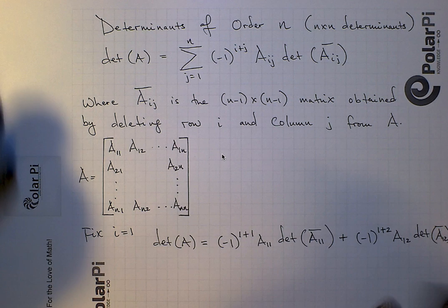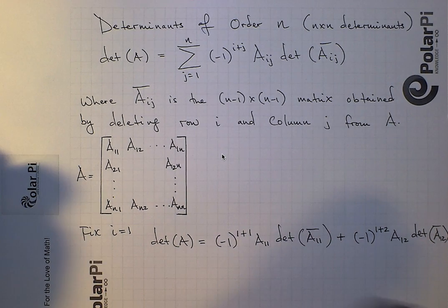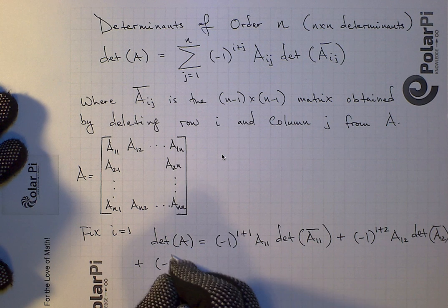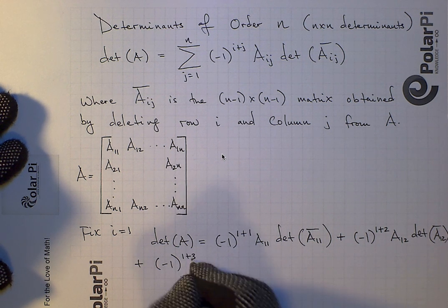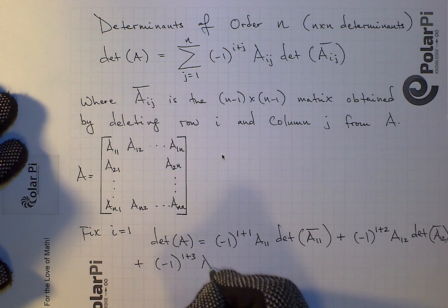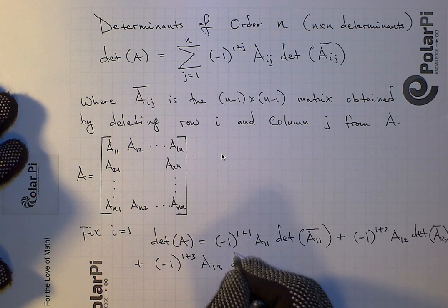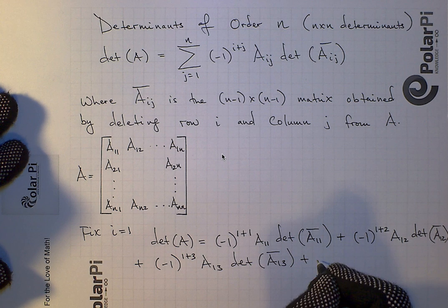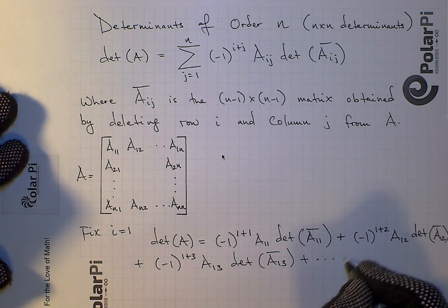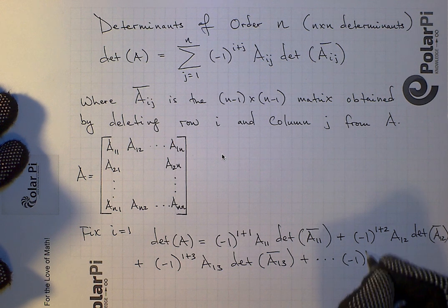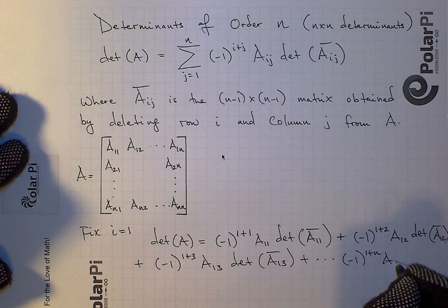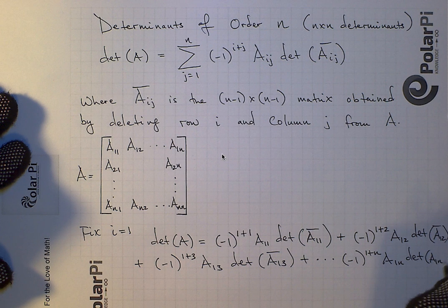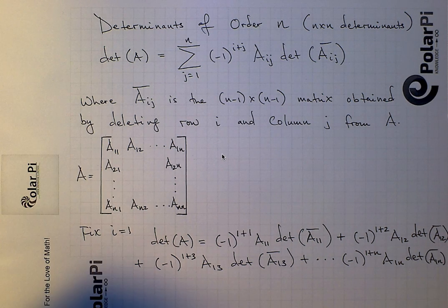And then it's going to be times the determinant of a12 bar. Okay, that was almost off the page. All right, a12 bar, I had to squeeze it in. And then plus, you get it, and so the next is going to be negative one to the one plus three. And then it's going to be times a13, and then times the determinant of a13 bar. And then plus, you get it, dot, dot, dot, and the very last guy is going to be negative one to the one plus n power, a1n, and then times the determinant of a1n bar. Okay, and we'd be done. This would be the determinant. Like, so the determinant of A would be the sum of everything I have written here.